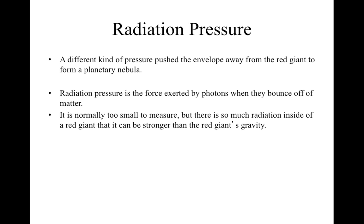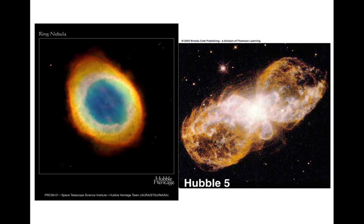This radiation pressure that pushes the envelope away has a significant effect. It also is an important effect in red giants in keeping their atmospheres extended. It's normally too small to measure, but in this very last stage of red giants, it can become stronger than a red giant's gravity and actually puff off this outer envelope. That's when we wind up with these beautiful objects called planetary nebulae.